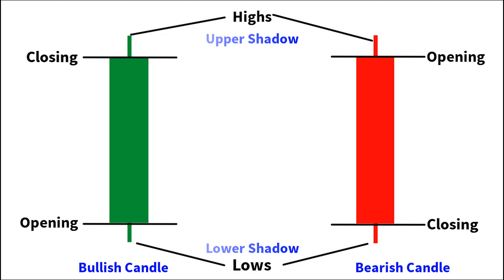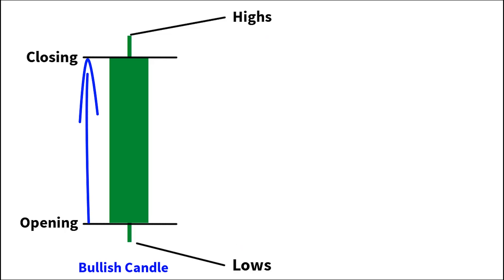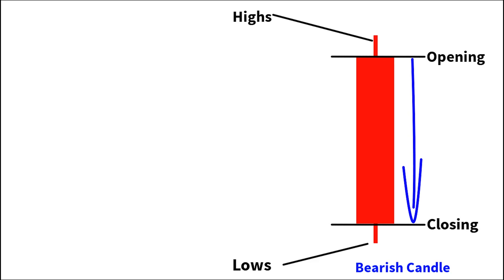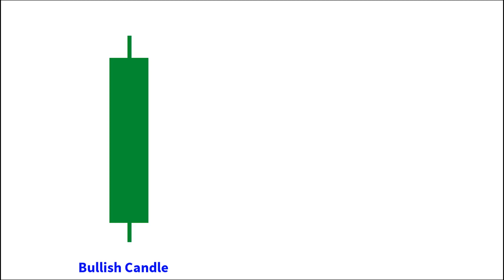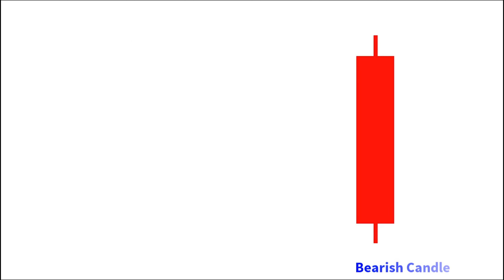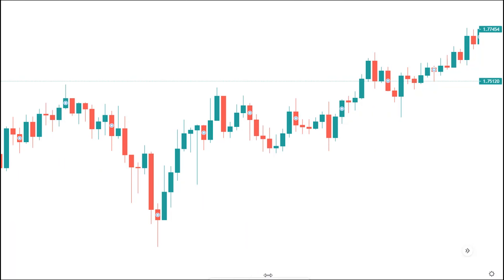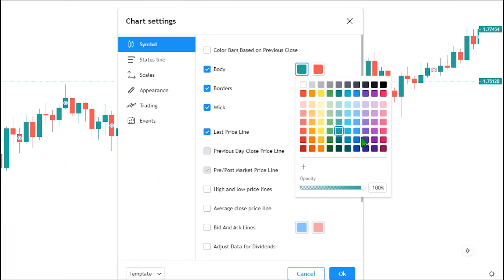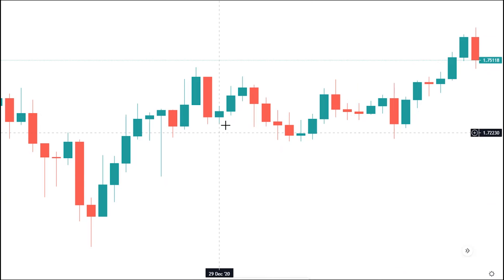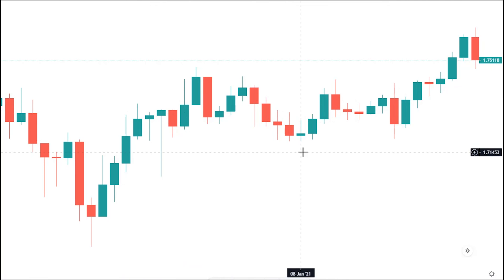Therefore, a bar which has its close level higher than its opening level signifies a bullish bar, while a bar which has its close level lower than its opening level signifies a bearish bar. Bullish bars can be displayed as green color on the trading chart, while bearish bars can be displayed as red color. But this is not a general rule because there's an option for traders to choose any type of color they wish to differentiate the bars on their trading chart. I personally love green for my bullish bars and red for my bearish bars, so make sure you choose something suitable for you.